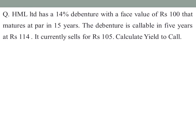The given values are: face value is Rs. 100, annual interest or coupon is 14% of Rs. 100 = Rs. 14. Maturity period is 15 years. The callable amount is Rs. 114. Since we are calculating YTC, the call period N is 5 years, coupon is Rs. 14, and current price is Rs. 105.